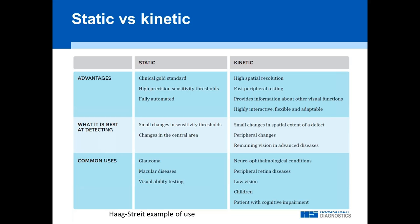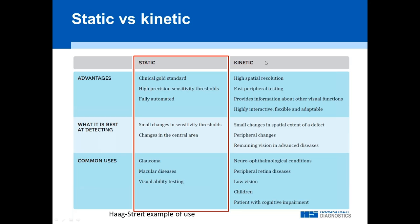Kinetic, on the other hand, gives us really high spatial resolution, fast peripheral testing, and information about other functions. It's highly interactive and flexible for patients who struggle. It's good for small changes in spatial extent like papilledema, useful when we have to scan a large full field, and nicer for patients in advanced disease. Various uses include neuro-ophthalmology, peripheral retinal disease, low vision, children, or any patient with cognitive impairment.